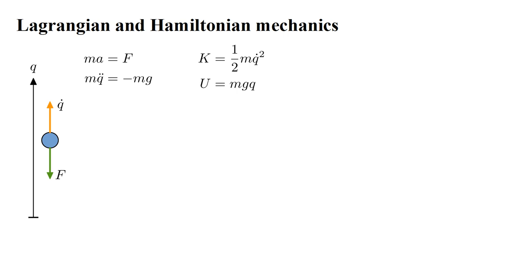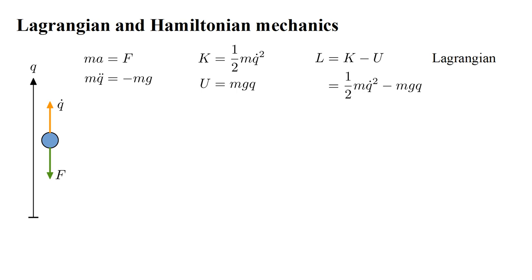In Lagrangian mechanics, we generate expressions for the kinetic energy K and the potential energy U. K equals one-half mass times velocity squared, one-half M Q dot squared. U equals M G Q, force times height above the ground. Then we form the function L equals K minus U, called the Lagrangian.